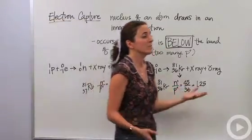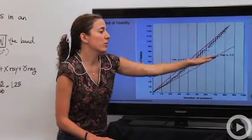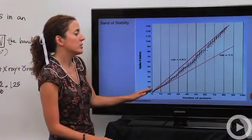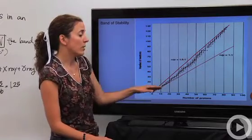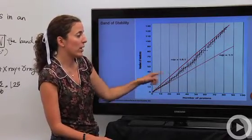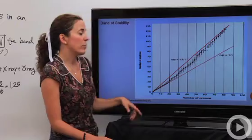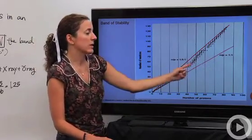So if we go over and look at the band of stability, here is when the ratio is 1 to 1, this lower red line. Here is when the ratio is 1.5 to 1. So at low atomic numbers, they're going to be 1 to 1. High atomic numbers, they're going to be 1.5. And this gray area is where things are stable.